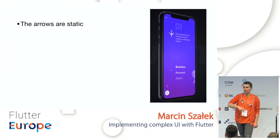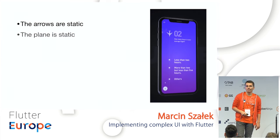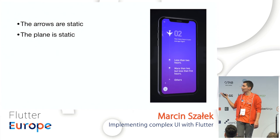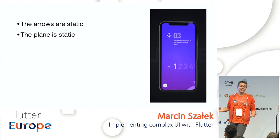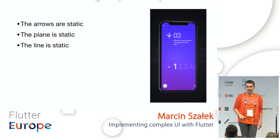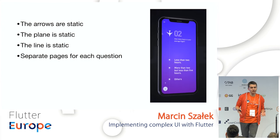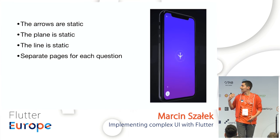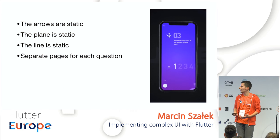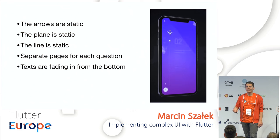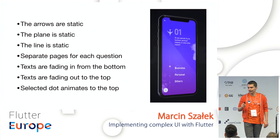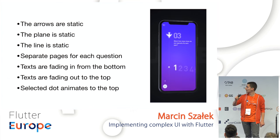Each question is a totally separate page — we can just replace the widget to present another question. The texts fade in from the bottom and fade out to the top. Each text is animated separately with a small delay. And the selected dot animates upward to the plane when the user taps it.